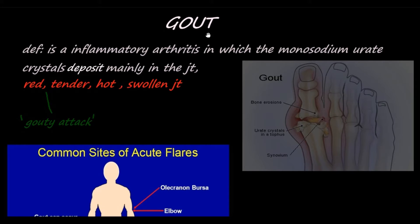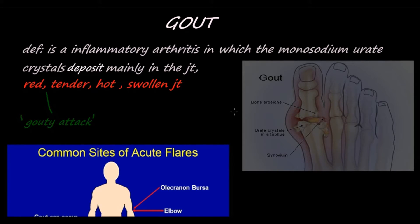In this video we are going to talk about gout. Gout is an inflammatory arthritis in which monosodium urate crystals deposit mainly in the joints. Gout is characterized by recurrent attacks of red, tender, hot, swollen joints — an episode called a gouty attack. In more than 50% of patients, the monosodium urate crystals are deposited in the metatarsophalangeal joint, which is the proximal joint of the first toe.